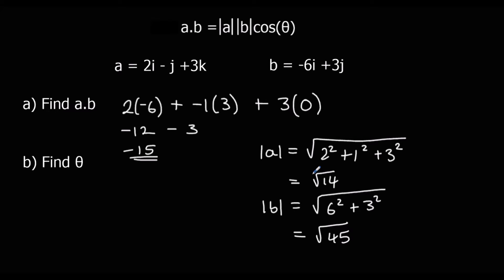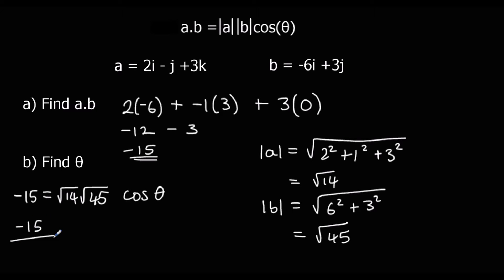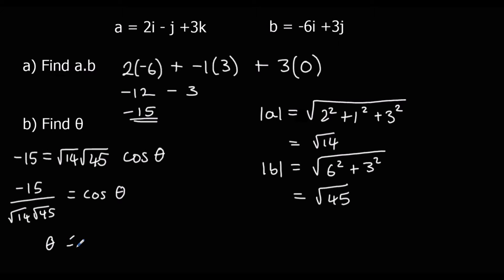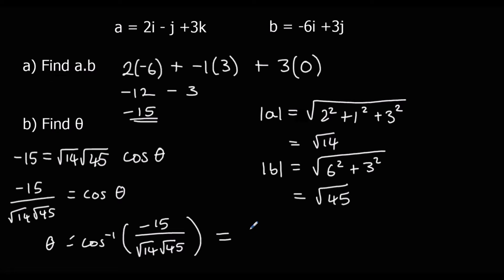We can substitute all these into the formula now. So we've got negative 15 equals root 14 times root 45 times cos theta. Dividing both sides by root 14 times root 45 gives us negative 15 over root 14 root 45 equals cos theta. To get theta by itself, we apply arc cos — shift cos — of negative 15 over root 14 root 45. Type it into the calculator, and we get 126.7 degrees to one decimal place.